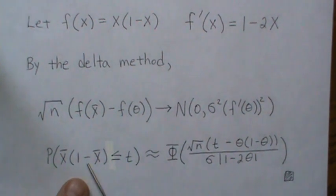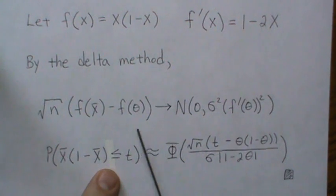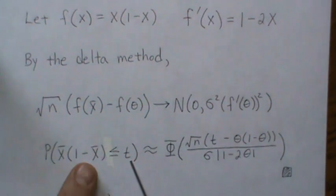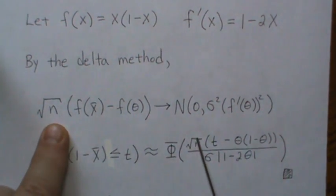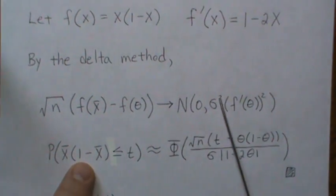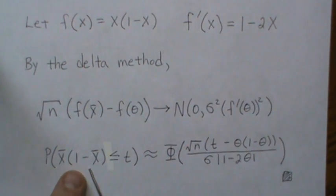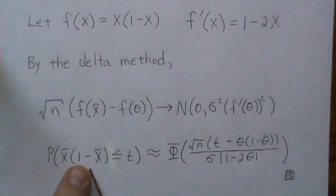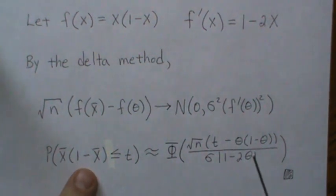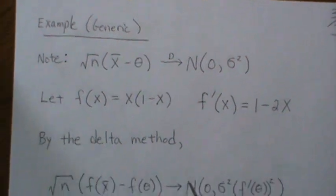That means we can calculate probabilities of this function. To find a given probability, we subtract g(theta) from both sides, multiply both sides by sqrt(n), then divide both sides by the standard deviation — which is the square root of sigma squared times g'(theta) squared. Since variance is positive we ensure this is positive. This gives us a standard normal random variable, and we evaluate the probability using the standard normal CDF.